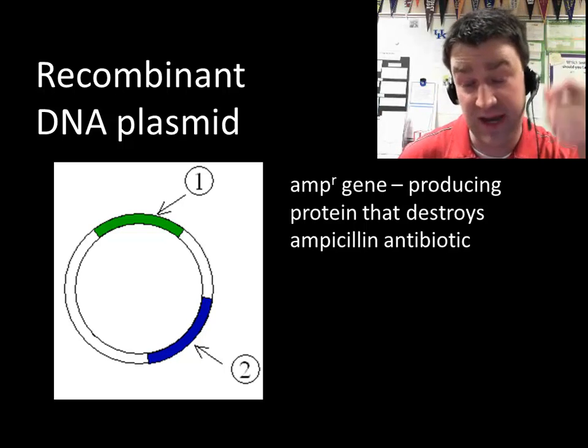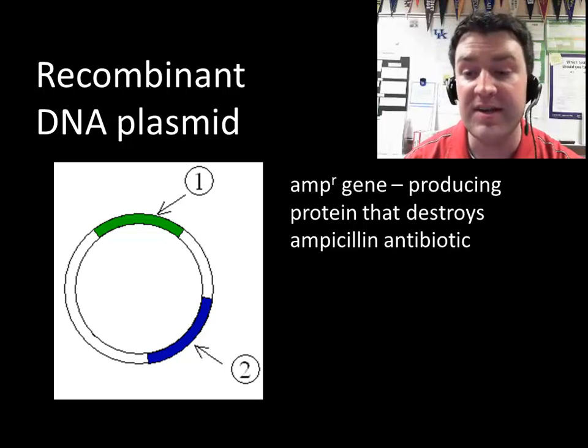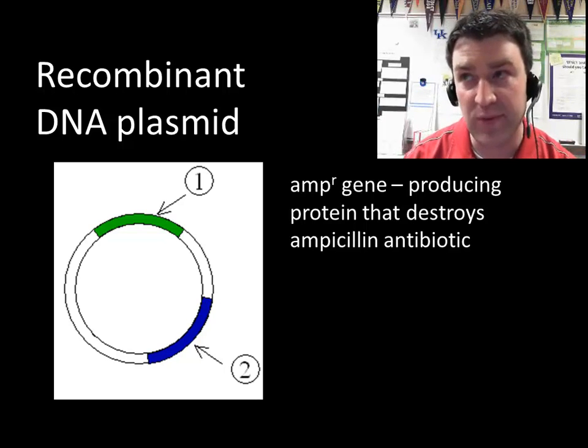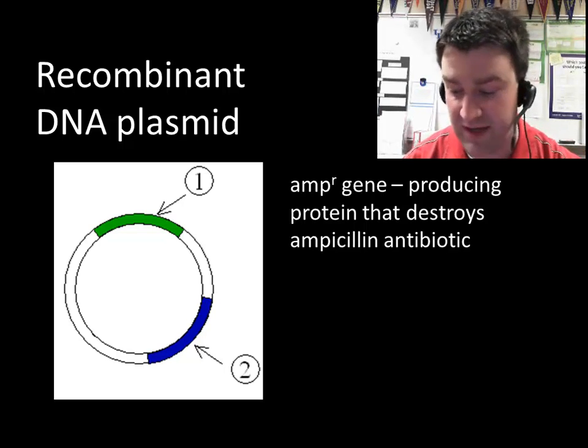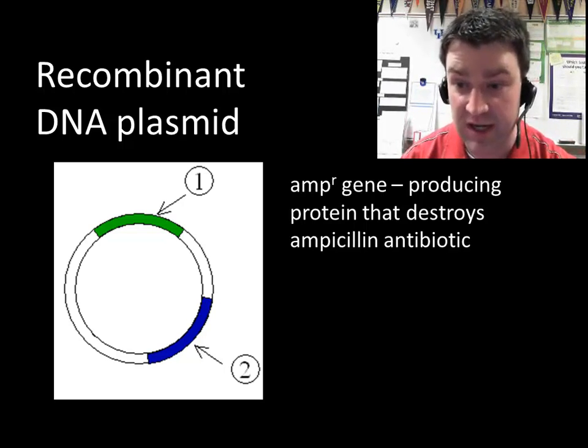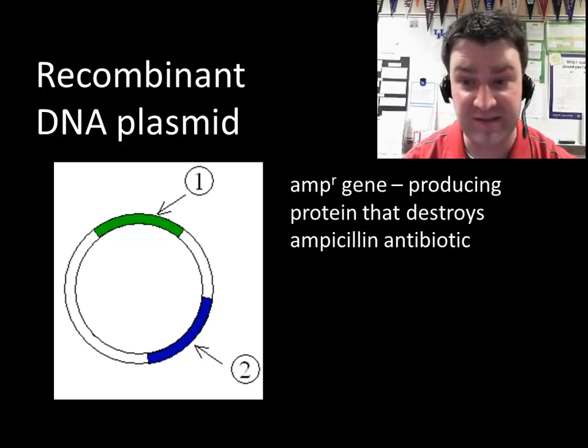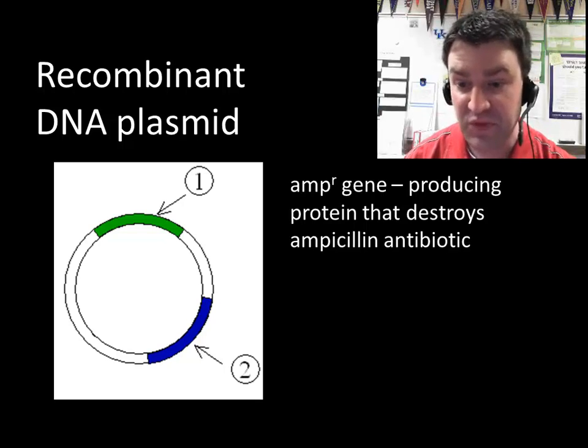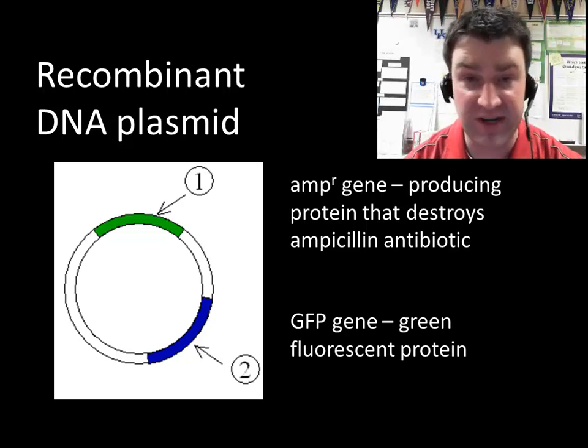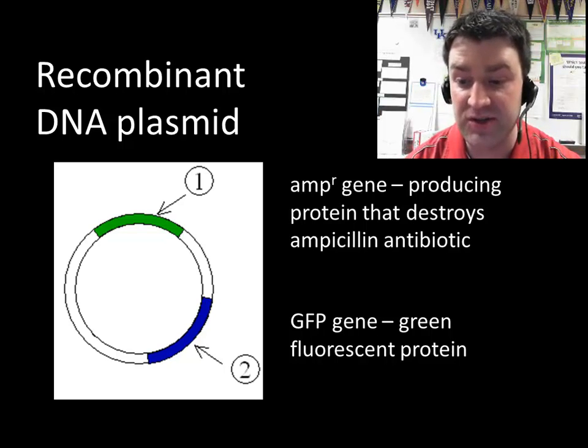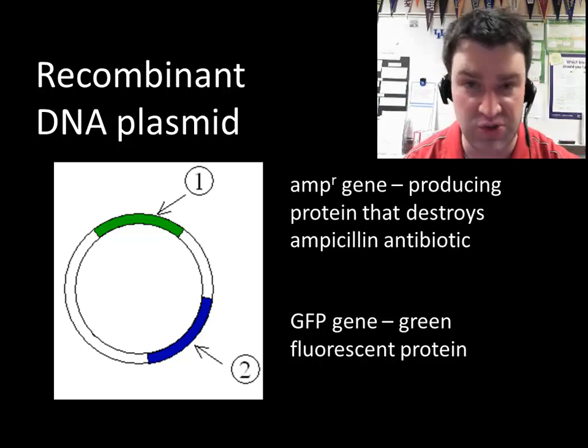This is often used in bacterial genetic engineering experiments because it enables them to separate the bacteria that transform from the bacteria that don't, sometimes called an antibiotic screen because bacteria will die if they don't get the plasmid with this gene in it. We're also going to see that we can use a color marker as a way of demonstrating transformation so they should also express a gene that makes them green in color as opposed to the usual white.